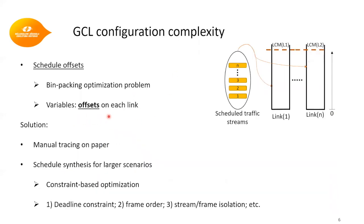We face a problem resembling the bin packing optimization problem, in which we try to find the offsets of the frames on each link in their path. Based on the transmission time of each frame on each link, we determine time slots to configure at each gate control list. For small networks we can draw the schedule on paper, but as the network or traffic grows, the problem becomes more difficult. Therefore, in the majority of previous works, a constraint-based optimization approach has been utilized, and we prefer to use this approach as well.